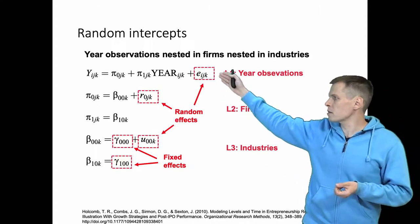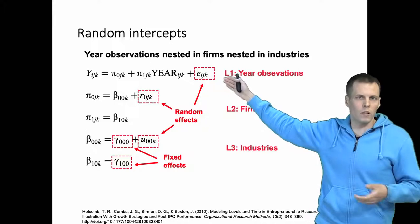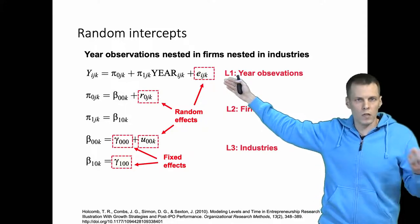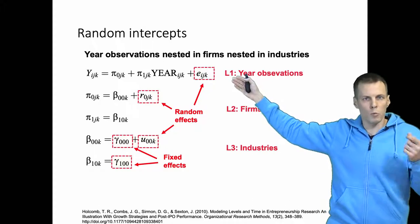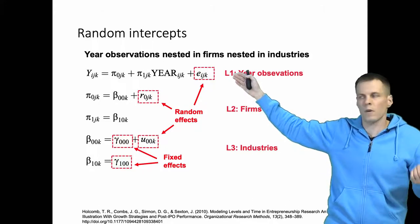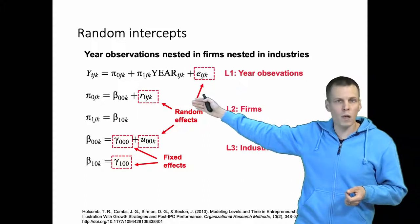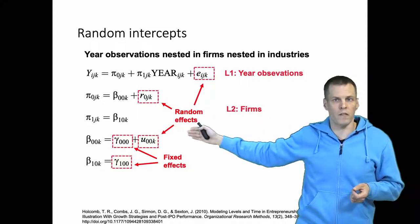We have the year observations here. This is what we would call the error term or error variance or disturbance. This is each individual unit, individual observation specific variation that is random. Then we have the firm level variation and the industry level variation.